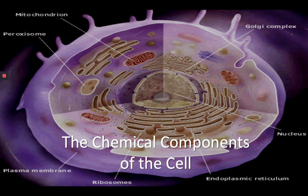Moving on, let's now look at the cell and the different minute components that make its existence possible. The characteristics of substances depend on the way their atoms are linked together in groups to form molecules. Therefore, in order to understand how living organisms are built from inanimate matter, it is crucial to know how all of the chemical bonds that hold atoms together in molecules are formed.